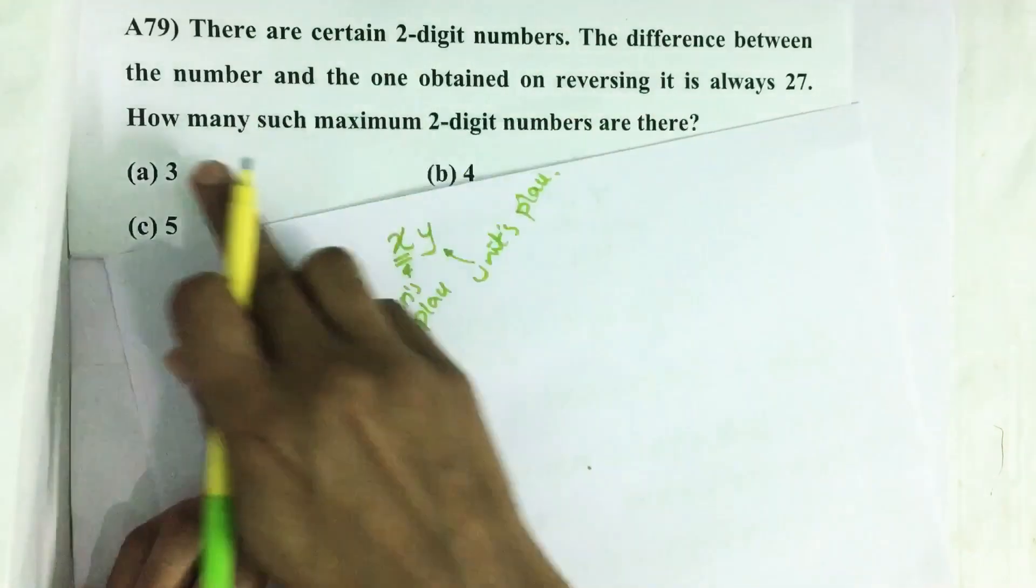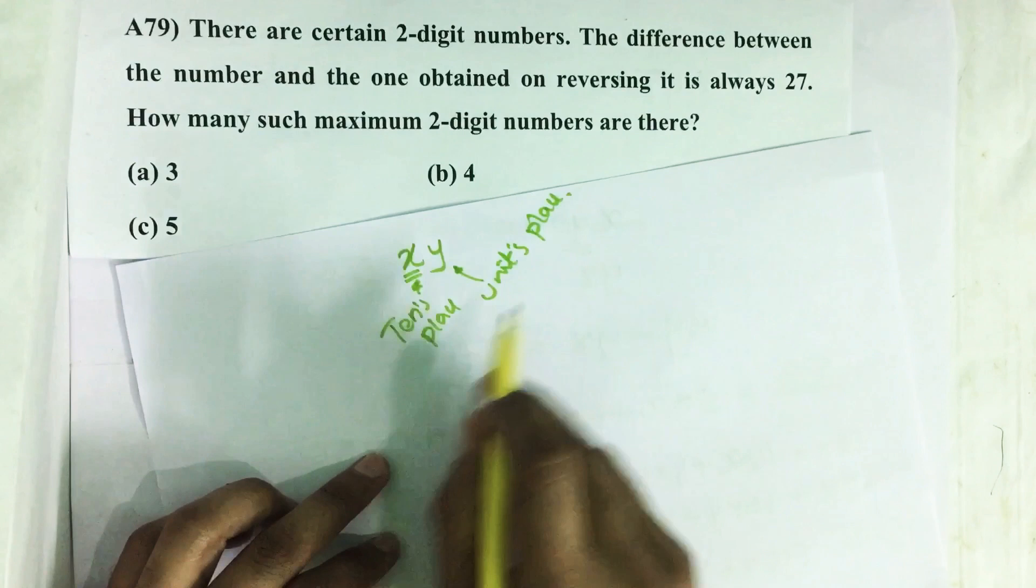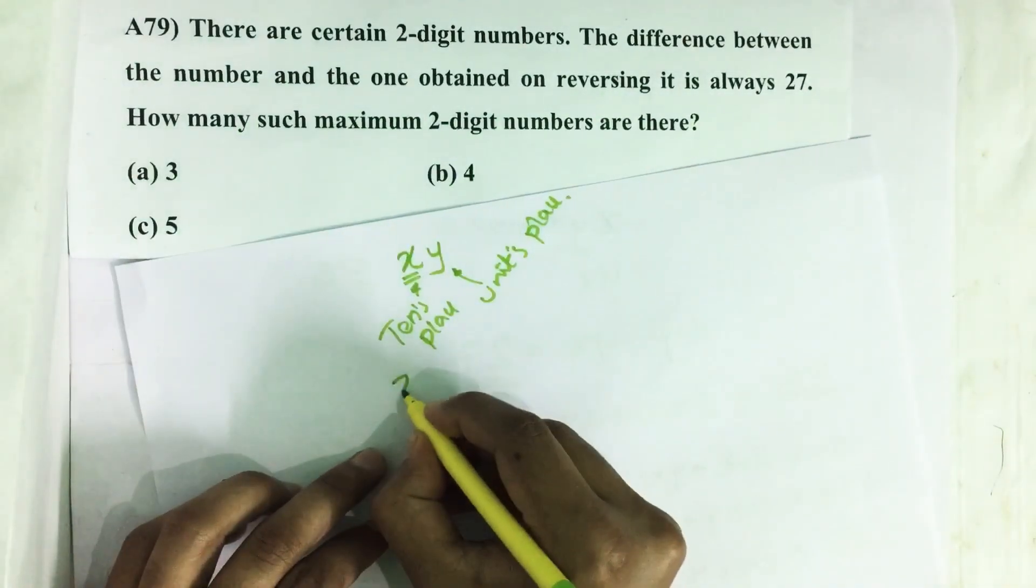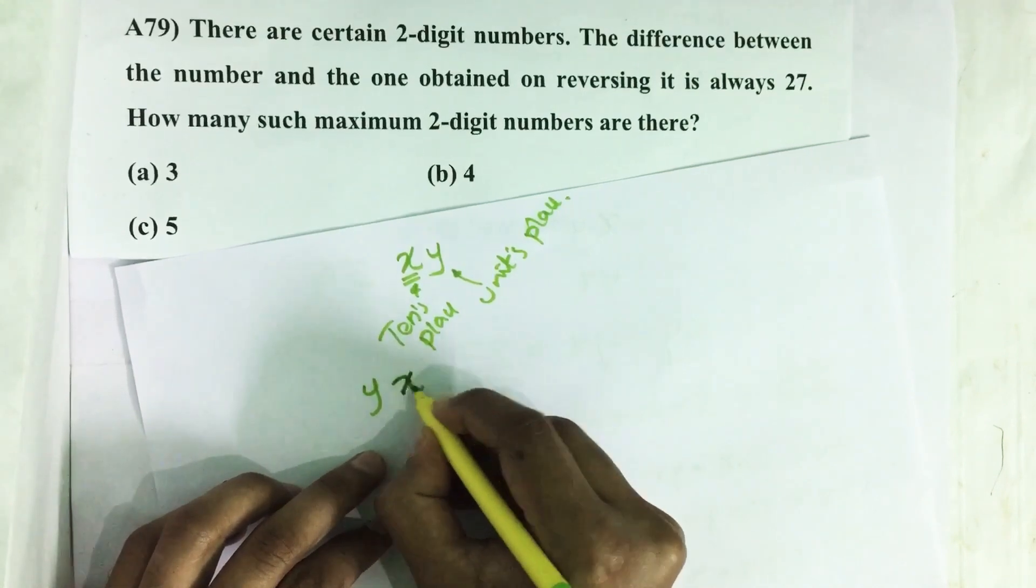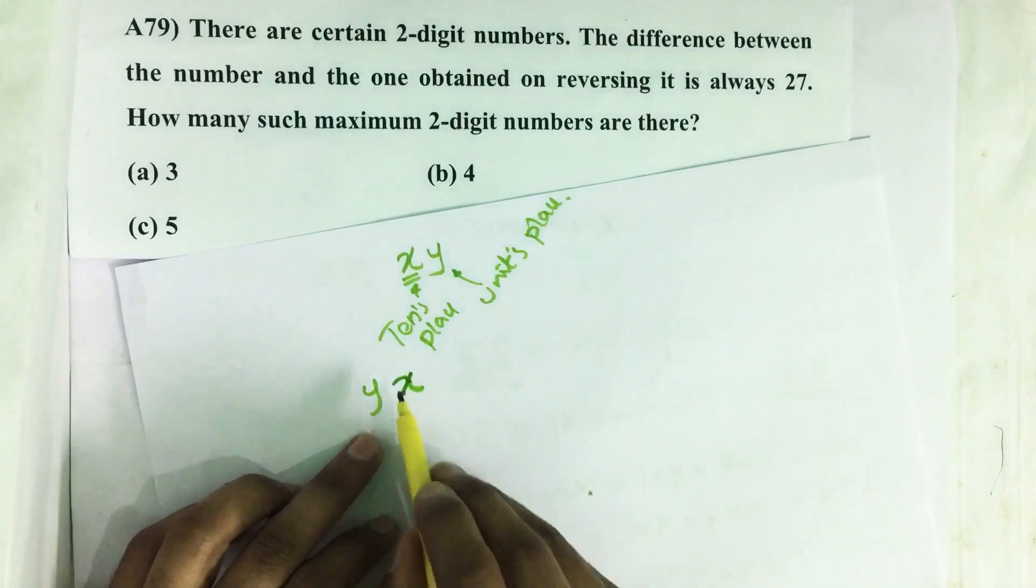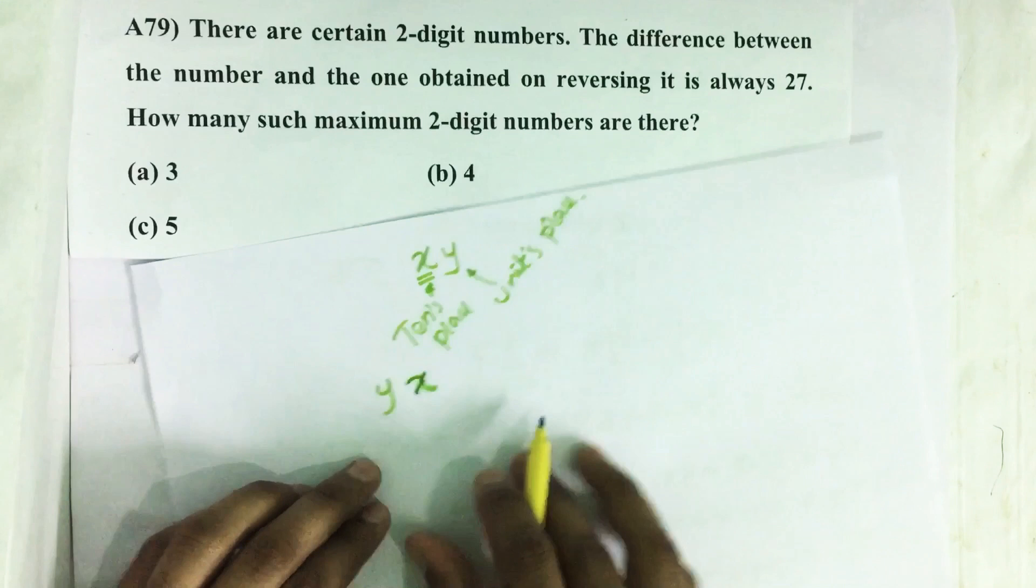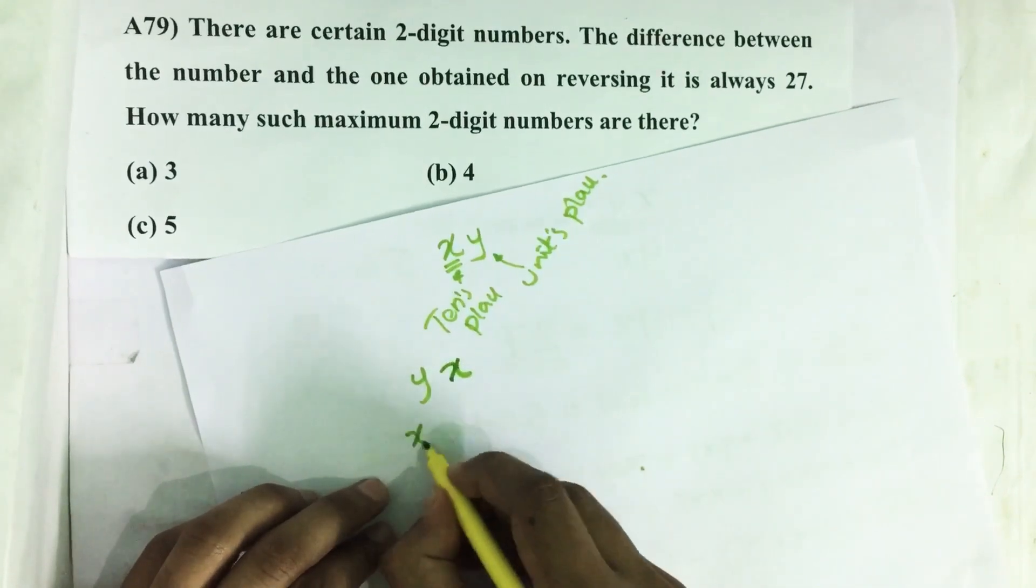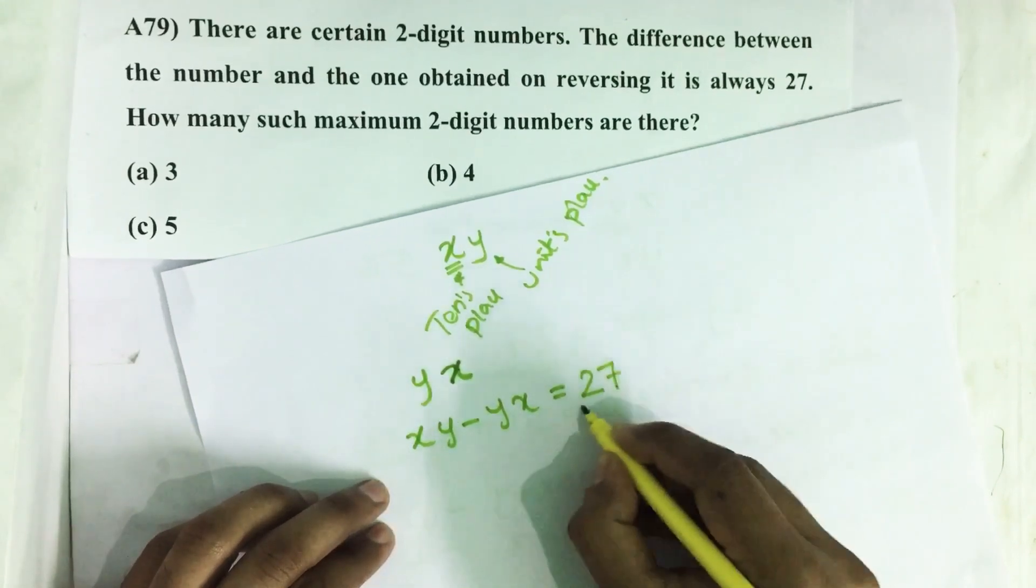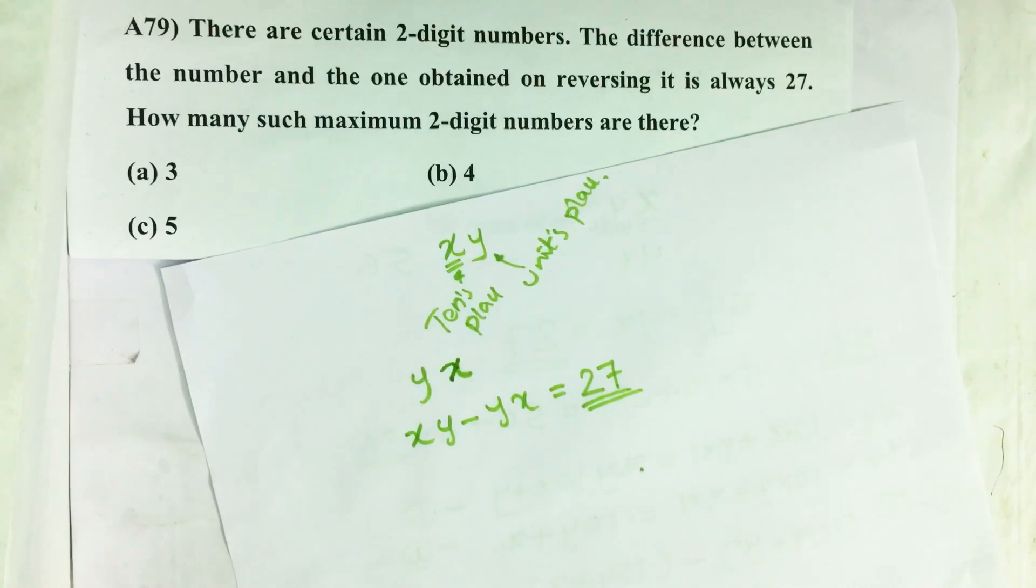Then in the next statement it is given that on reversing this number, the difference of these two numbers is always 27. On reversing we get YX. The unit digit becomes the 10th place and the 10th place digit becomes units place digit. So the difference between these two, XY minus YX, should always be 27. How many such double-digit numbers are there? That is what we have to find.